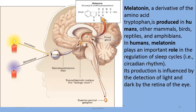Melatonin is a derivative of the amino acid tryptophan and is produced in humans, other mammals, birds, reptiles, as well as amphibians. It plays an important role in many activities, but the most important is the sleep-wake cycle — the circadian rhythm. Its production is influenced by the reduction of light as well as the dark period.